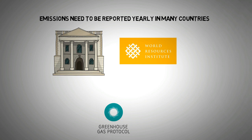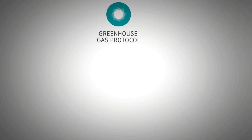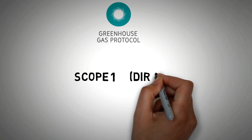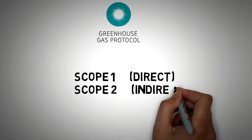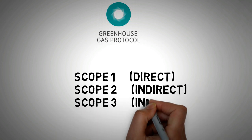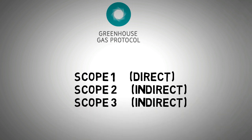The GHG Protocol breaks down the scope of emissions into three parts. These are namely Scope 1, Scope 2, and Scope 3 emissions. Scope 1 are the direct emissions, while Scope 2 and 3 are the indirect emissions.